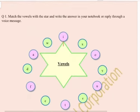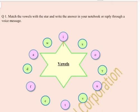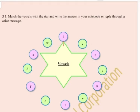Question number 1: Match the vowels with the star and write the answer in your notebook or reply through a voice message. हमें vowels को star से match करना हैं. For example, I — I is a vowel, so हमने I को match किया star से. X is a consonant, so we will not match X to the star. Next letter is O — O is a vowel, so we will match O to the star.